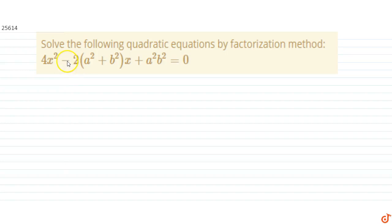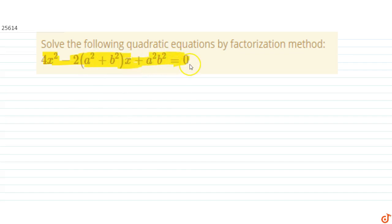In this question we have to solve the quadratic equation 4x² minus 2 times of (a² + b²)x plus a²b² equals 0, and we have to use the factorization method.